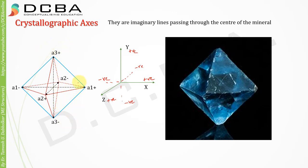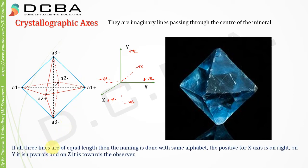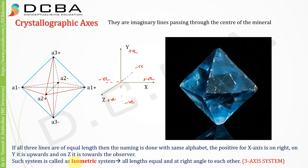Now, if all three lines are of equal length, the naming is done with the same alphabet. That is why I named them all 'a' — it shows that all three axes drawn are of the same length. If any one axis were different, I would name it b or c. The positive for x is on the right, for y it is upwards, and for z it is towards the observer. This system in which all three axes are of equal length and at right angles to each other is called the isometric system. Iso means same.